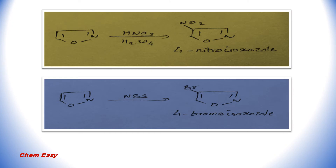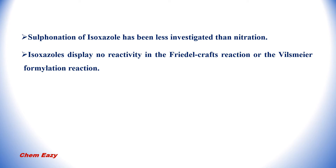Here you can see the nitration and bromination reactions of Isoxazole. Isoxazole is nitrated with a nitric acid and sulfuric acid mixture, giving a 4-nitro-isoxazole. In the case of bromination, Isoxazole is brominated with N-bromosuccinimide to give the 4-bromo-isoxazole. Sulfonation of Isoxazole has been less investigated than nitration. In addition, Isoxazole displays no reactivity in Friedel-Crafts reactions or the Vilsmeier formylation reaction.